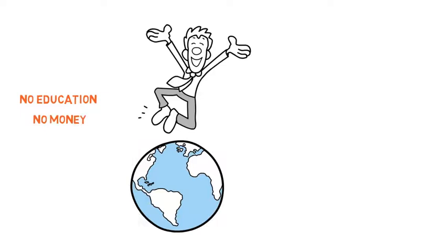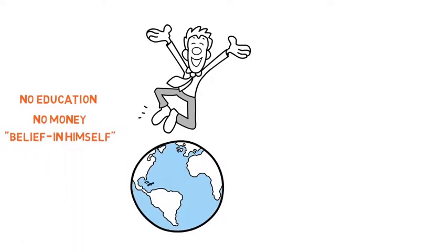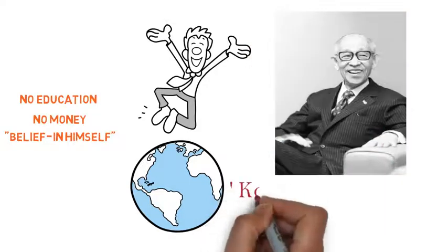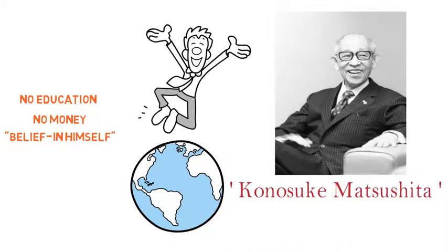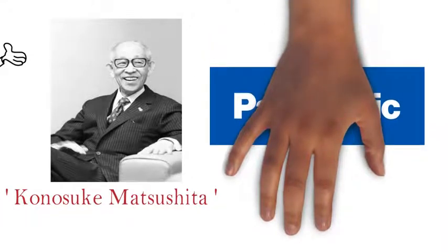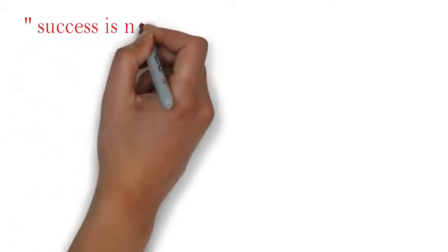All this was made possible by a man with no education and no money. All he had was a belief in himself. His name is Konosuke Matsushita. The company he started in a small house is now known across the world as Panasonic.